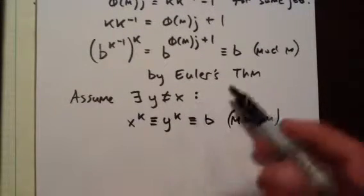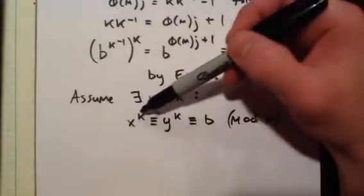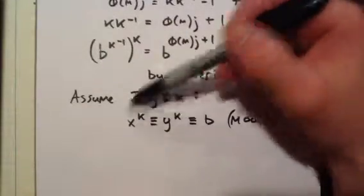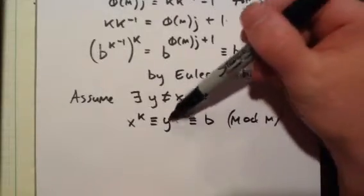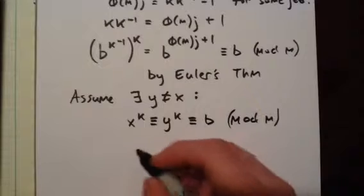raise the whole equation to the power of k inverse. What we get is x^(k·k^(-1)) = x, which is congruent to y^(k·k^(-1)) = y, which is congruent to b^(k^(-1)).